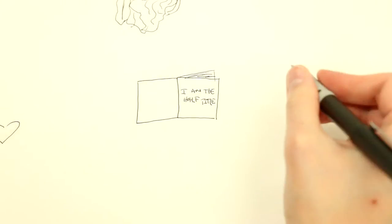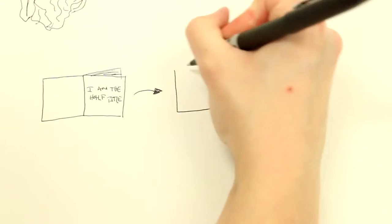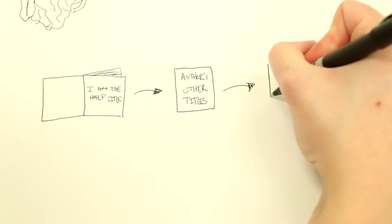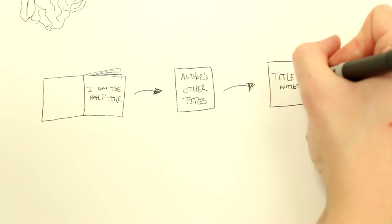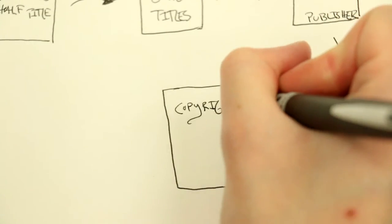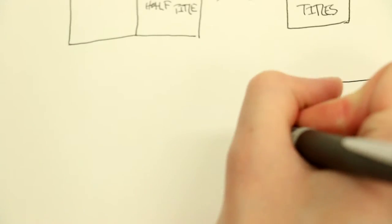Following the end sheets, you have the half title page. And after this, you have a page of other books written by the author and then the title page. The title page will have the title of the book as well as the author or authors and publisher. The other side of this page will have copyright notice and other important information about the book.